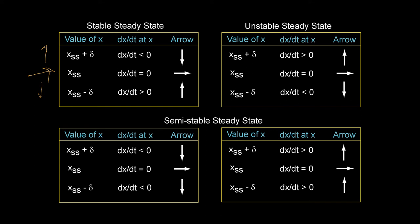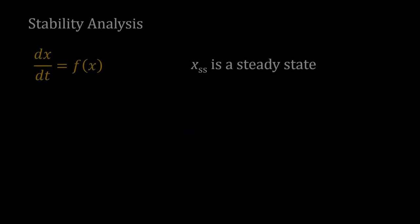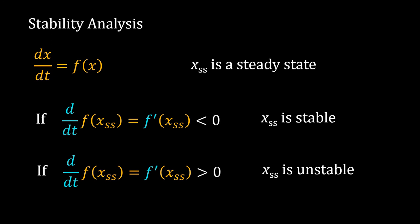There is another way to identify the stability of a steady state: using differentiation. Suppose the ODE is dx/dt equal to f of x, and the steady state is x_s. Calculate the derivative of the right-hand side function at that steady state. If this derivative is negative, the steady state is stable. If this derivative is positive, the steady state is unstable.